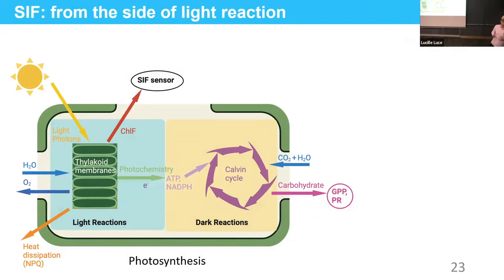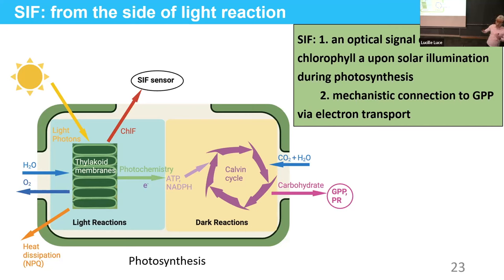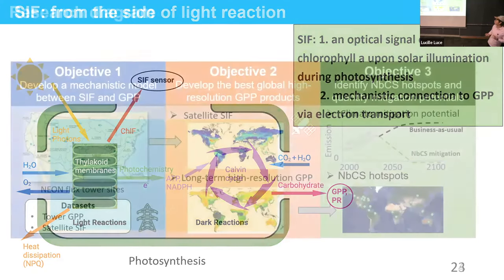SIF has emerged as a mechanistic proxy that can remotely sense vegetation photosynthesis from space. In the light reaction of photosynthesis, when light photons are absorbed by the thylakoid membranes in the chloroplast, excited higher-stage energy quickly decays via several pathways: energy dissipated as heat (NPQ), energy used for chemistry via electron transport transforming into ATP and NADPH, and a very tiny part re-emitted as fluorescence — SIF — observed by SIF sensors in space or at flux towers. SIF has a mechanistic connection to GPP via the electron transport.